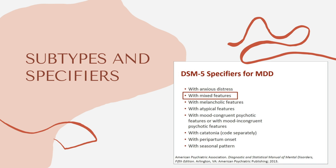There will also be specifiers, which are an extension to a diagnosis to clarify a disorder or illness further and allow for more specific diagnoses. Examples for depression might include specifiers such as chronic, catatonic, postpartum onset — also known as postpartum depression — or seasonal pattern, also known as seasonal affective disorder. You'll see that sometimes things we think are their own diagnoses are actually nestled underneath a larger umbrella diagnosis.